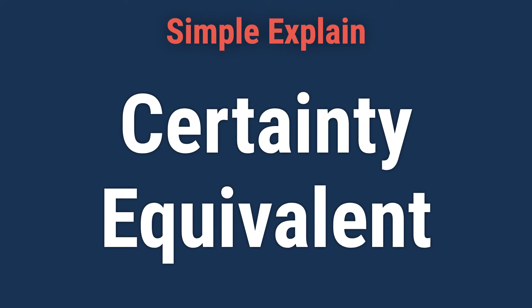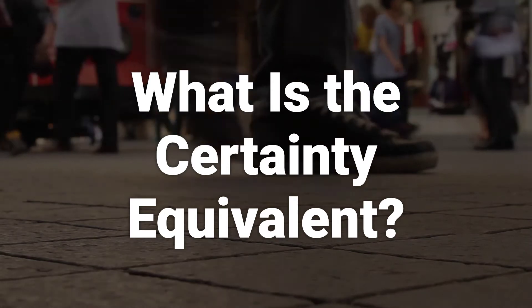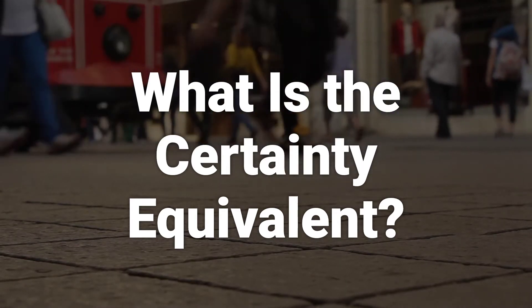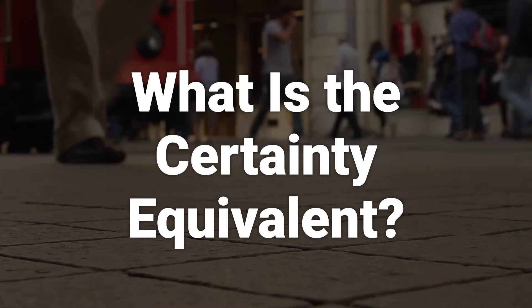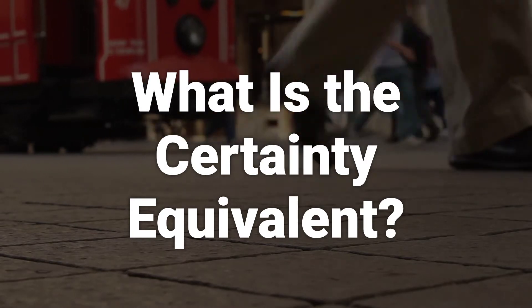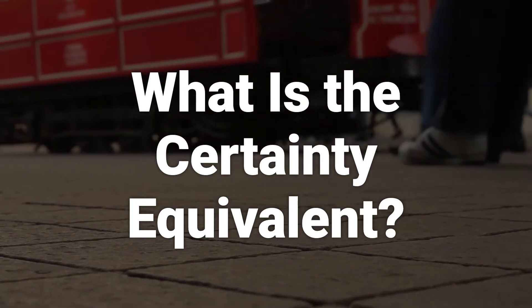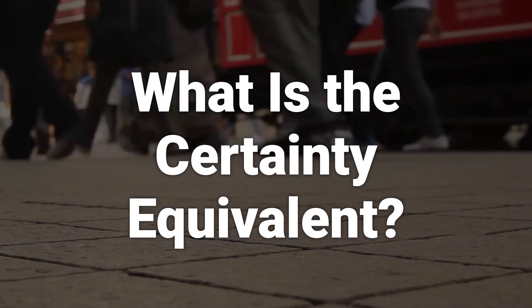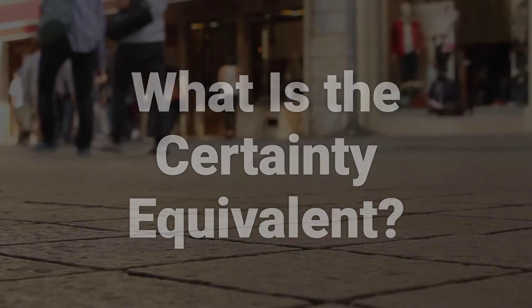Today, we will talk about the certainty equivalent. The certainty equivalent is the guaranteed return someone would accept now, rather than taking a chance on a higher, but uncertain, return in the future. It's the guaranteed amount of cash that a person would consider as having the same amount of desirability as a risky asset.